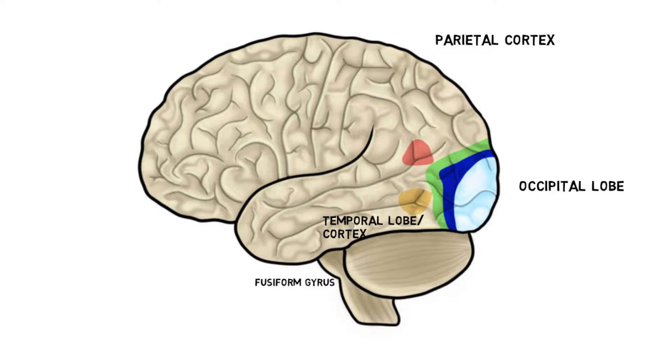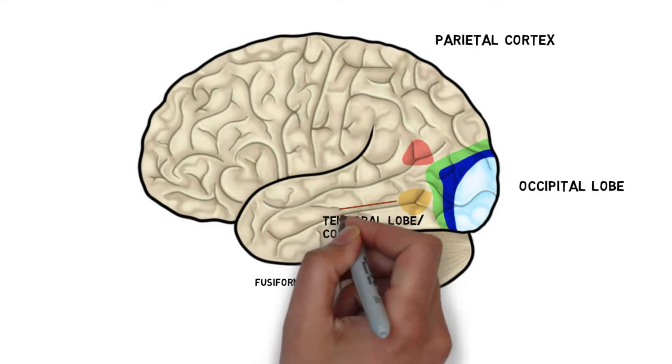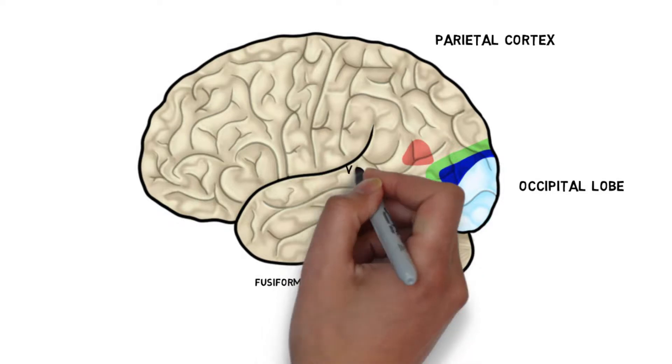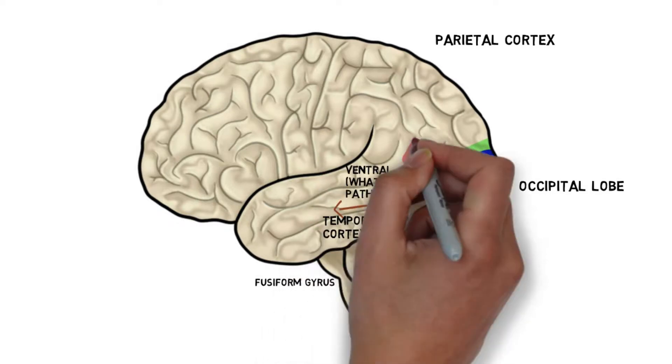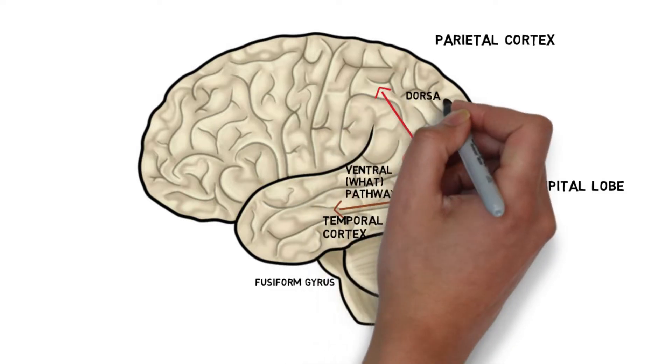If we look at projections from the striate cortex, there are two distinct functional pathways projecting ventrally towards the temporal cortex and dorsally towards the parietal cortex.